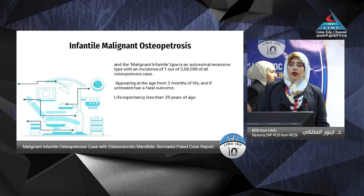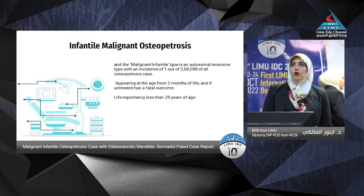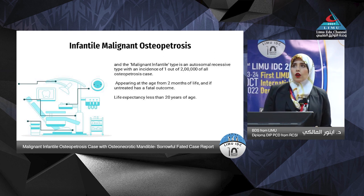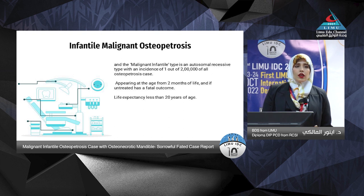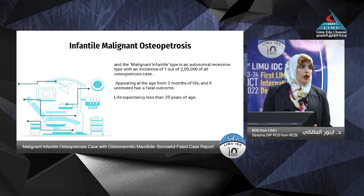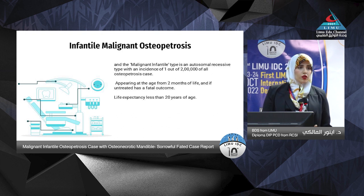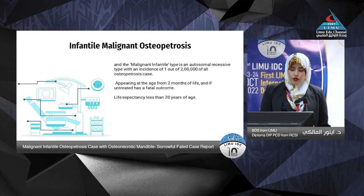The malignant infantile type — autosomal recessive — occurs in about 1 in 200,000 cases. The onset is from two months of age, and life expectancy is less than 20 years. If untreated, it is fatal within the first 5 years of age.